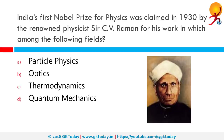India's first Nobel Prize for Physics was claimed in 1930 by the renowned physicist Sir C. V. Raman for his work in which among the following fields? The correct answer is optics. In 1930, C. V. Raman became the first person from Asia to be awarded a Nobel Prize in any field of science. The date of discovery was February 28th, which is now celebrated as National Science Day in India.